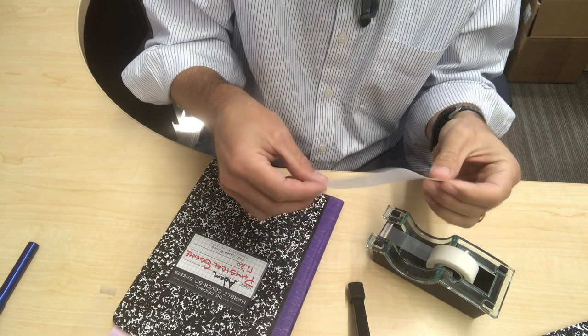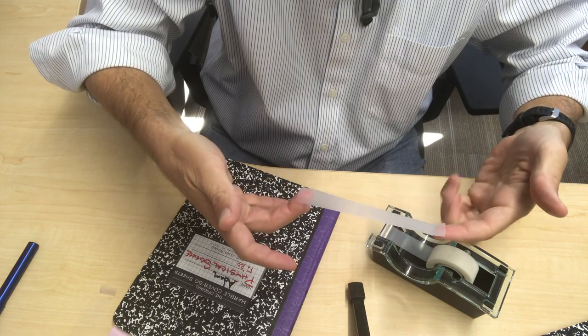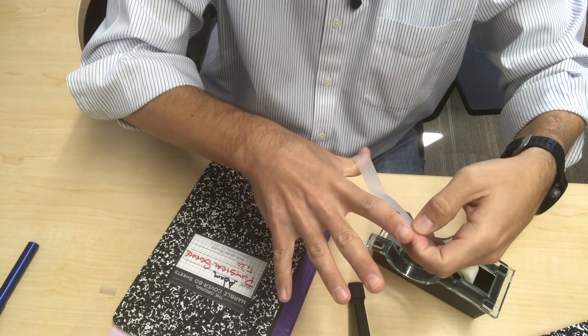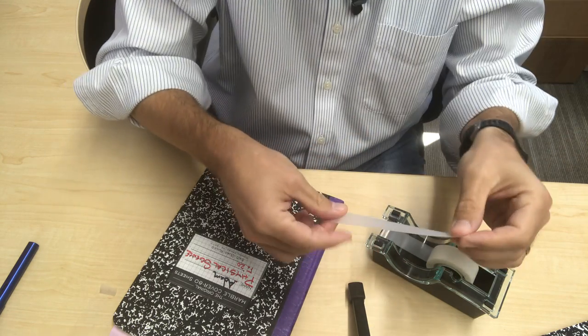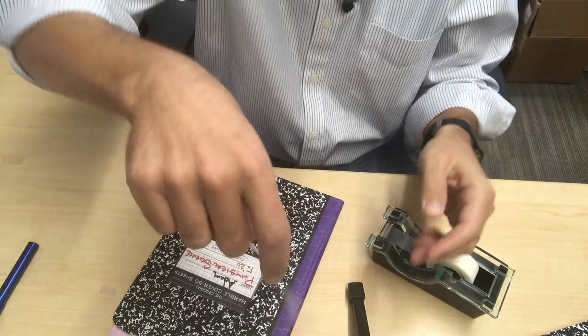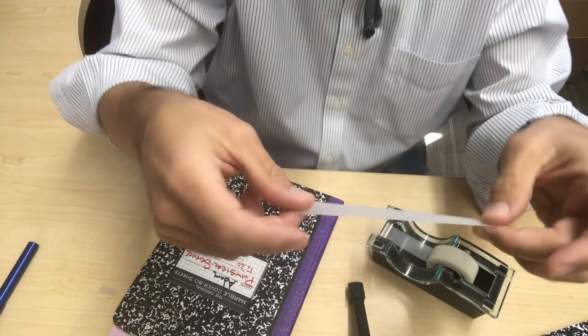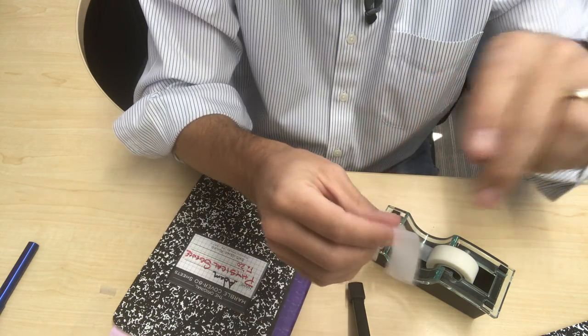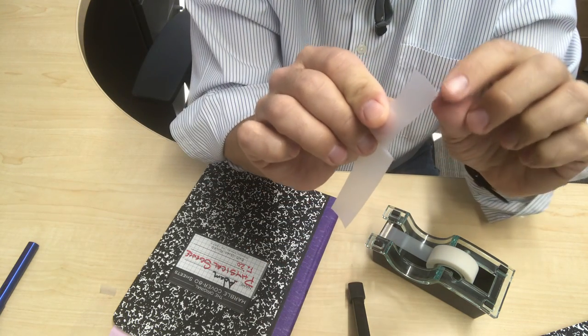You're gonna be peeling pieces of tape that are about six inches, ten centimeters, something. It doesn't matter, some consistent length that you can kind of handle. The most important thing you're gonna do with this piece of tape is to always fold over a handle.